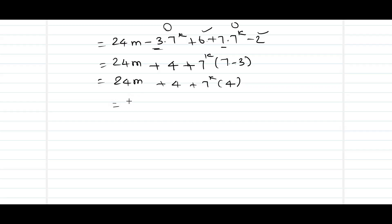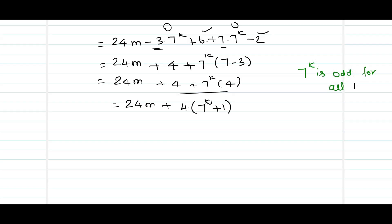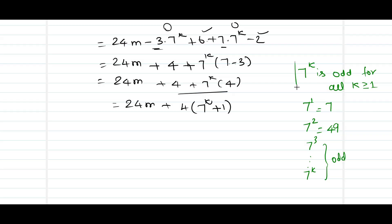Taking 4 common from the last two terms, we are left with 7 power k plus 1. Now, the key concept here is that 7 power k is odd for all values of k greater than or equal to 1 belonging to natural numbers. We can check: 7 power 1 is 7, which is odd; 7 power 2 is 49, which is again odd; and so on. So 7 power k is always odd.